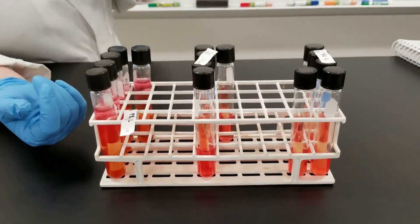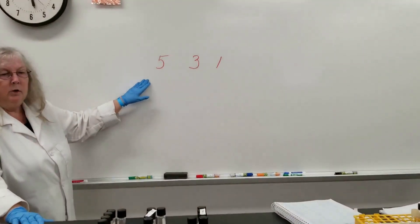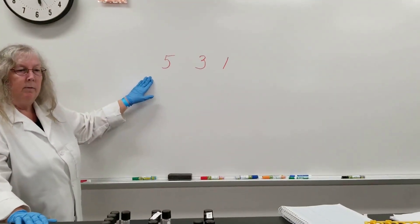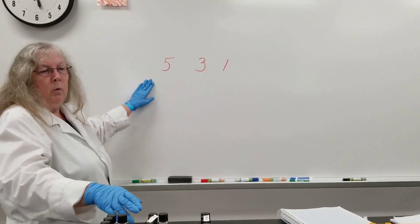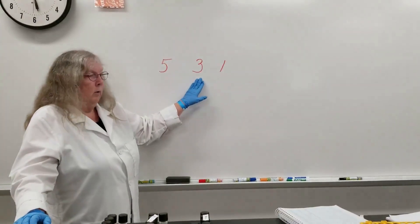So, you're going to end up with three numbers. So, just as an example, let's say in the first set you had all five tubes were positive. You'd write it as a five. With the one mil sample added, if three of the tubes were positive, you'd write a three.